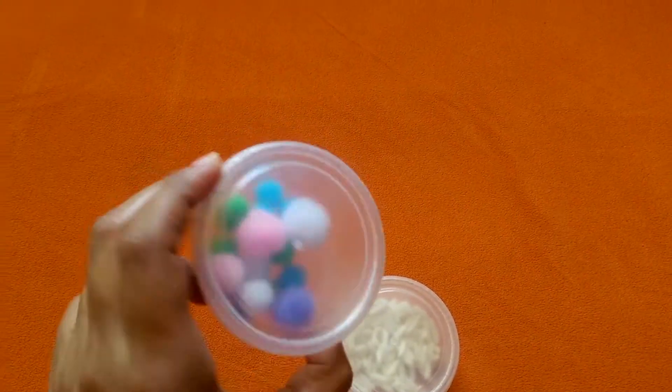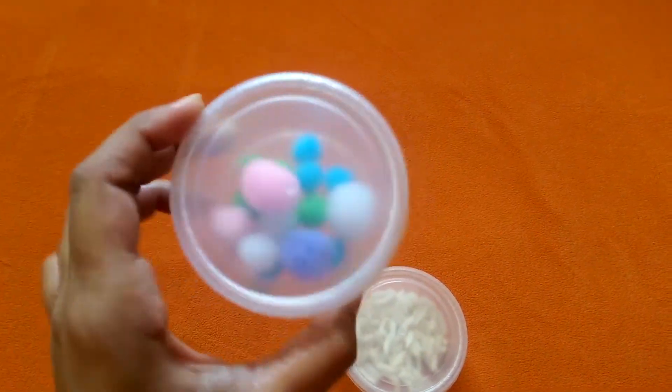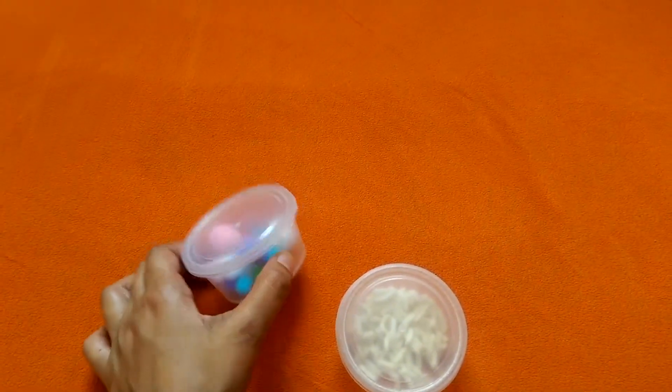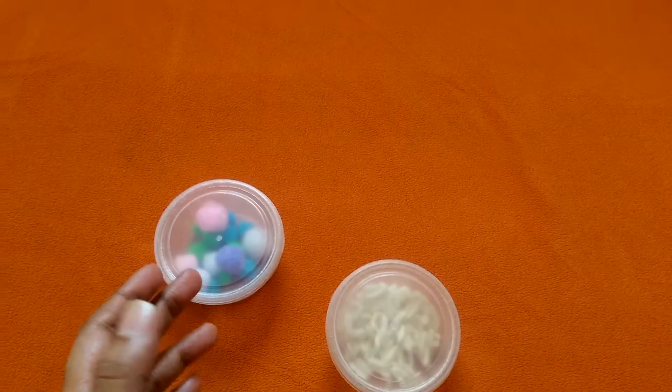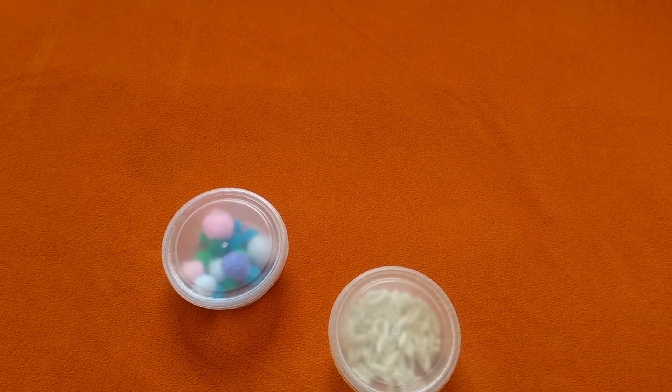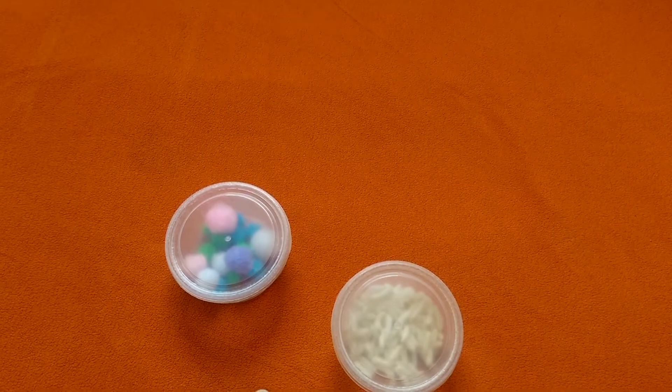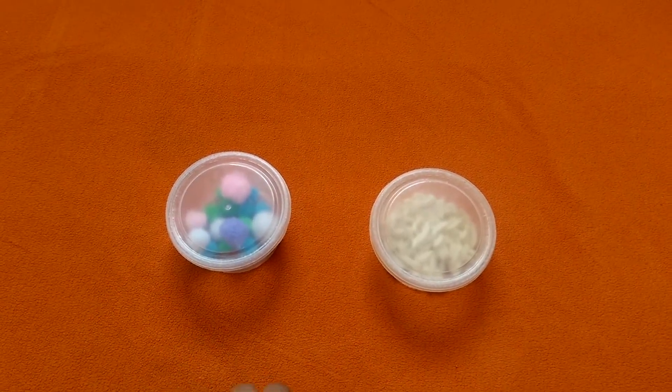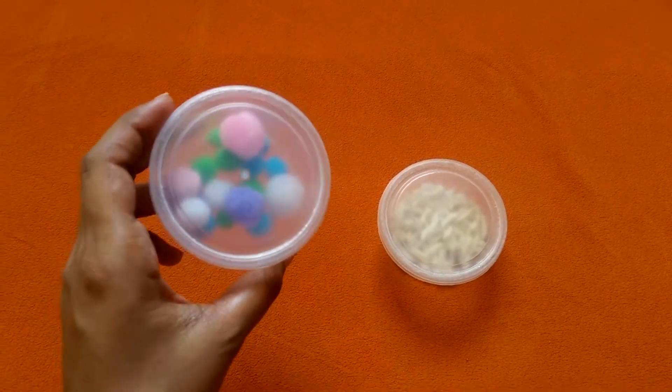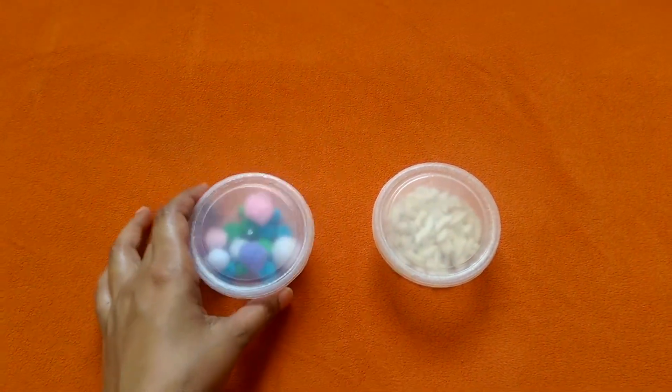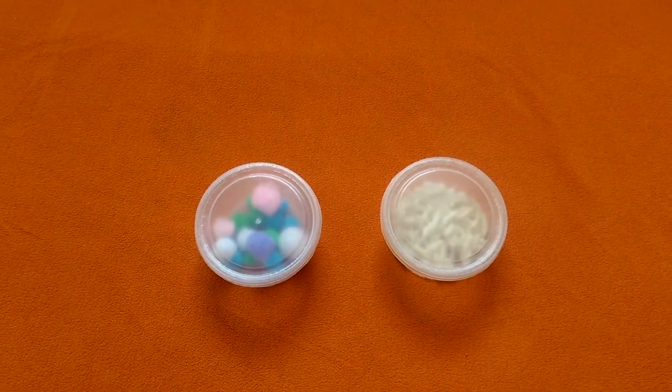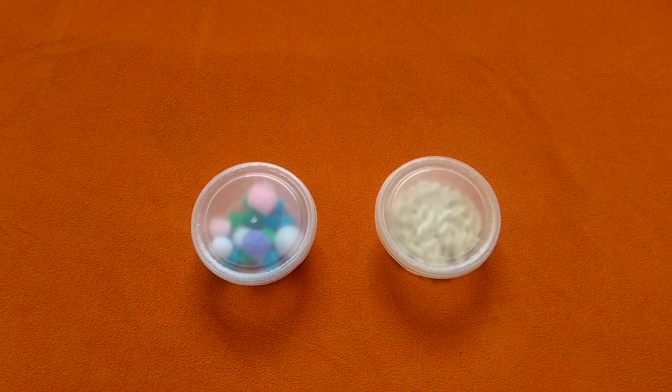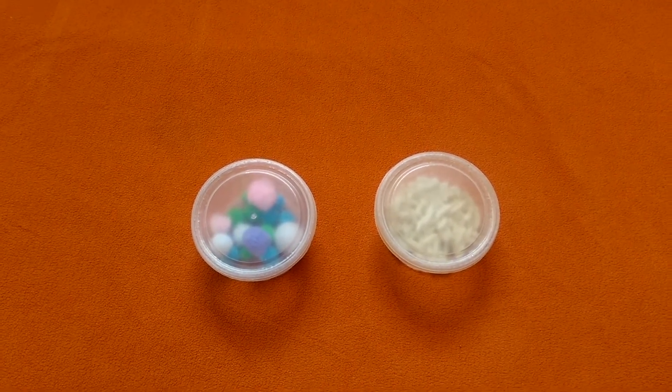In one of these boxes, I've added some pom-poms that come in assorted colors and sizes. You can even put cotton swabs, cloth pieces, glitter dust, etc., but I personally prefer pom-poms in assorted colors and sizes because they help baby in developing visual stimulation as well as help baby learn early math concepts.